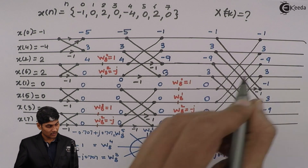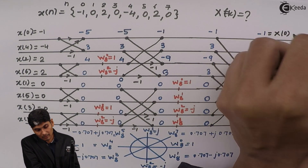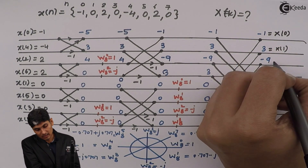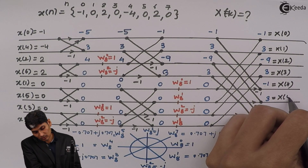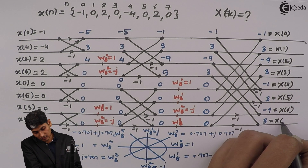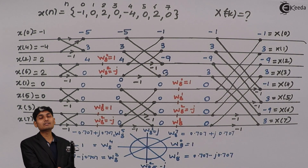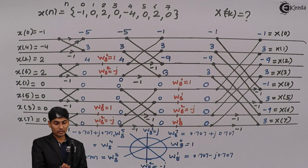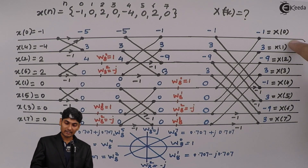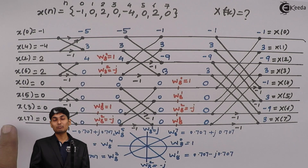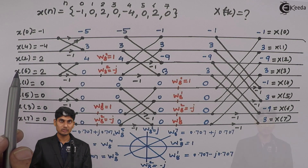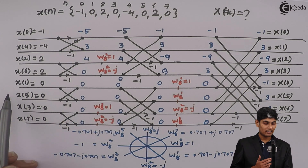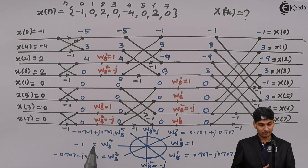So the final results are: X(0) = minus 1, X(1) = 3, X(2) = minus 9, X(3) = 3, X(4) = minus 1, X(5) = 3, X(6) = minus 9, X(7) = 3. This is the required DFT answer from X(0) to X(7). In DIT-FFT flow graph, X of k is written in order, but x of n is in shuffled bit-reversed order — 0, 4, 2, 6 for even, and 1, 5, 3, 7 for odd. This way the flow graph gives the correct result. Thank you.